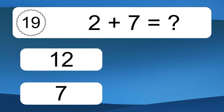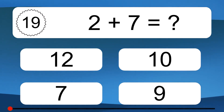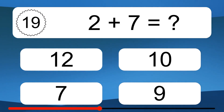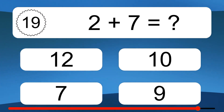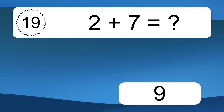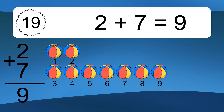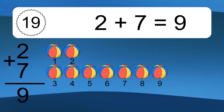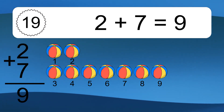2 plus 7 equals what? 2 plus 7 equals 9. Let's count it. 1, 2, 3, 4, 5, 6, 7, 8, 9.